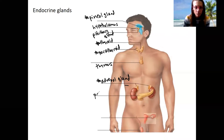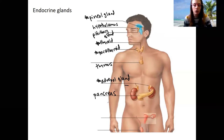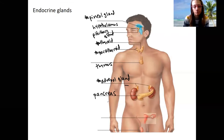The pancreas produces glucagon and insulin. It's not just endocrine — it's also an exocrine gland that produces digestive enzymes to help with digestion. So we'll look at it both as part of the endocrine system and come back to it with the digestive system as well.